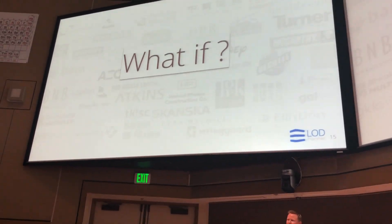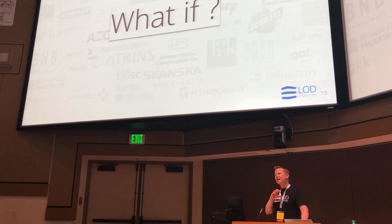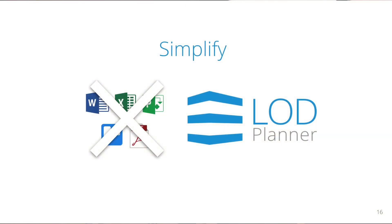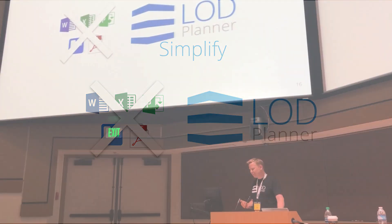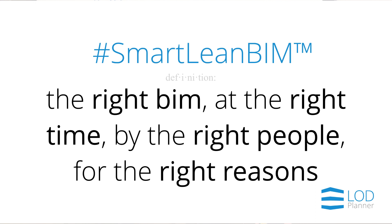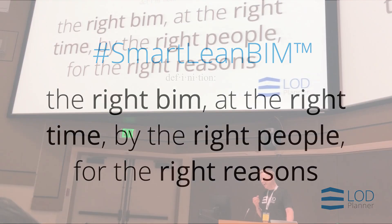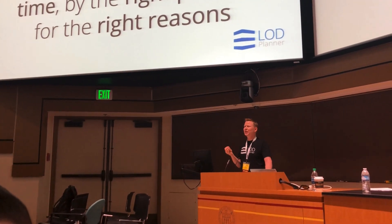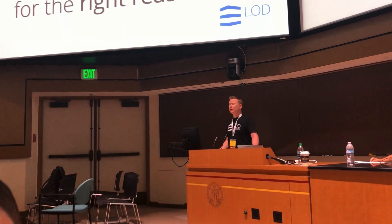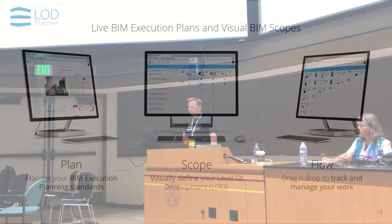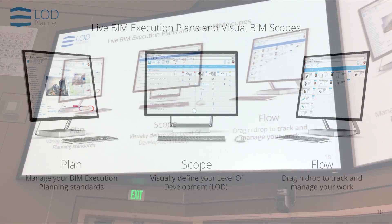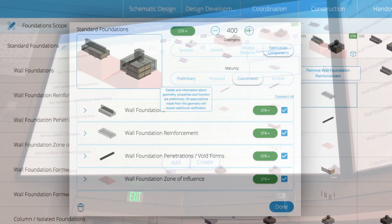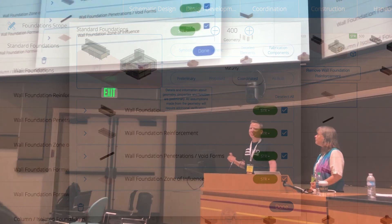So how do we get rid of all of this? We said: what if we could produce something that would tackle all of those problems? What if we could simplify that process, put it into one tool, integrate it into the rest of the workflow, actually make a standard process valuable — make it lean? We love the tag: smart, lean BIM. The Smart Lean BIM definition is the right BIM at the right time by the right people for the right reasons. 'For the right reasons' is really critical — you could have an owner that says 'I want some BIM on my project,' you could provide way too much BIM and have an unhappy owner. So: live BIM execution plans, visual BIM scopes, a simple workflow — and being able to use a very simple, compelling tool to get there.